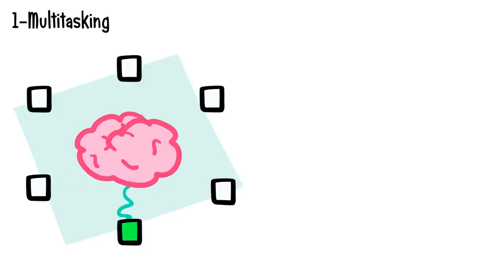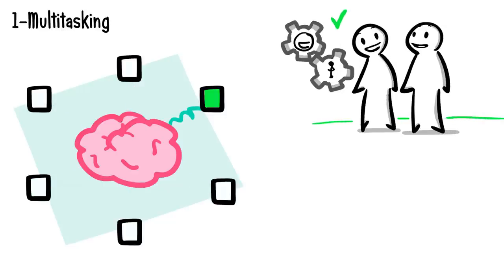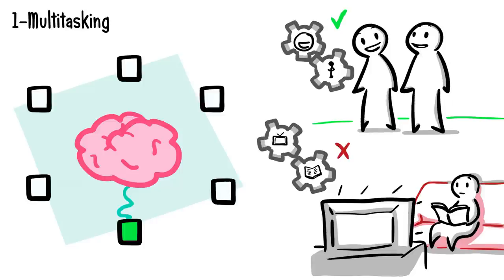The reason we can talk and walk at the same time is because these behaviors are automatic. On the other hand, your brain cannot process simultaneously tasks that require high levels of brain function, for example reading a book and watching television at the same time.